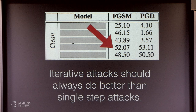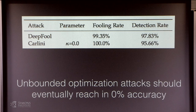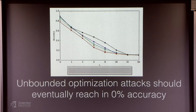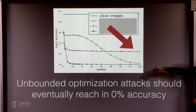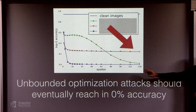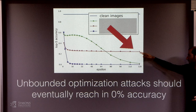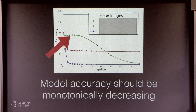Some sanity checks: if you use more iterations of gradient descent, your attacks should do better — if not, something is wrong. If given an unbounded perturbation budget, you should eventually succeed. If you can't succeed with unbounded perturbations, your attack is bad; fix the attack. For example, at epsilon=128 you can turn any image to solid gray, so you should achieve at most ~0.1% accuracy on ImageNet. Always make sure the accuracy is monotonically decreasing as you give the attacker more power.